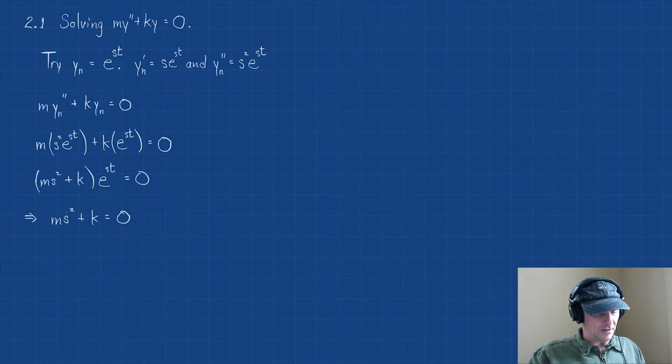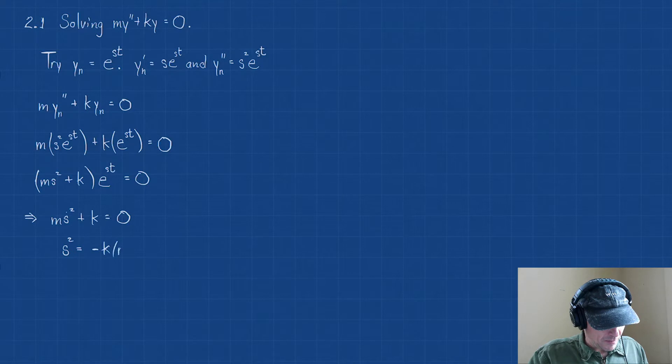So what this is really saying is this implies that ms² + k = 0. We can handle this. Now remember what our goal is: to figure out what s is. So I'm going to subtract the k, divide by the m. So I have s² = -k/m.